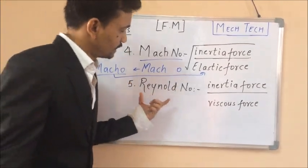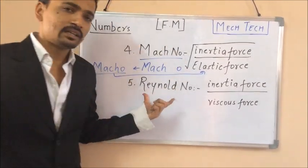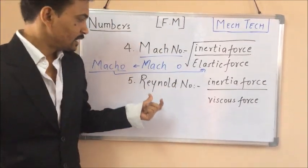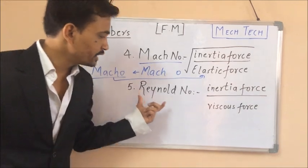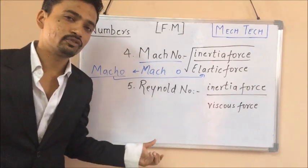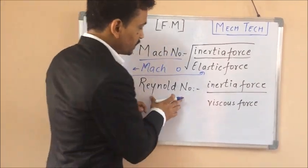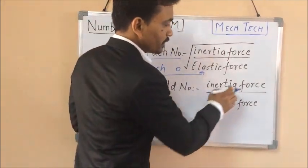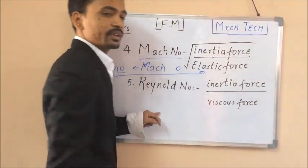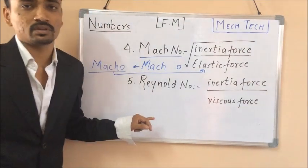The remaining one is the REYNOLDS NUMBER. This is the only number that you will have to remember directly — the Reynolds number is the ratio of INERTIA FORCE to VISCOUS FORCE. Thank you.